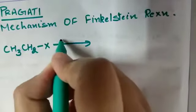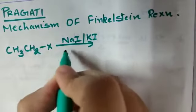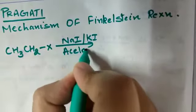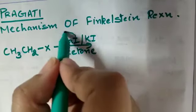and you treat it with NaI, NaI ke jagah pe potassium iodide bhi liya ja sakta hai, in the presence of acetone, then this X will be exchanged by I.